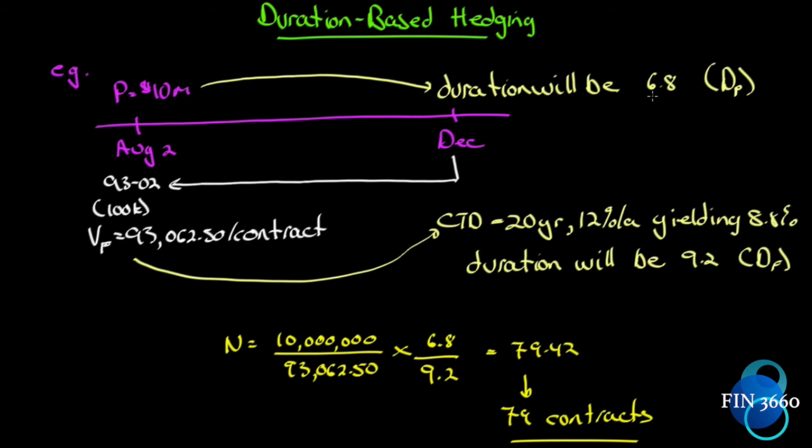Well, 6.8, you can read that as 6.8 years. The closest one around there probably would be the 10-year treasury bond contract, so we'll use that. For December, we look up the treasury bond futures contract for that month. Then we look at the quote today and we see it's 93-02 as of August 2nd. Each contract is for a hundred thousand dollars, so the value of the futures contract is 93,062.50 per contract. Problem is, the underlying asset—recall that for a treasury bond it is cheapest to deliver.